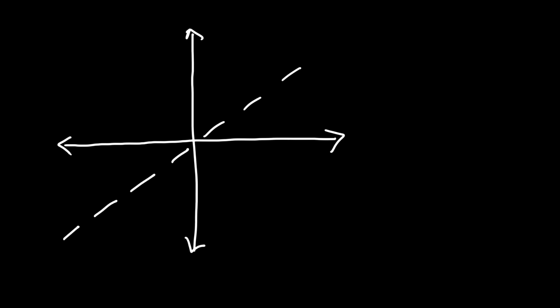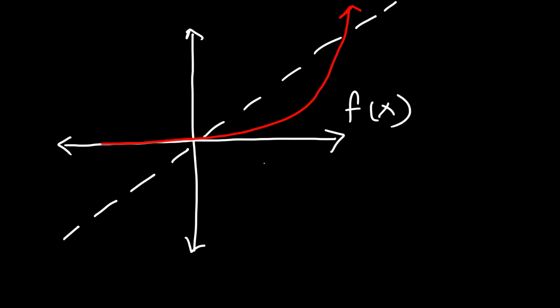Here's another example. Let's draw the line y equals x first. Let's say this is f and it looks like that. Notice that f started on the negative x-axis, so g is going to start from the negative y-axis and go up. Draw it so that it reflects across the line y equals x.